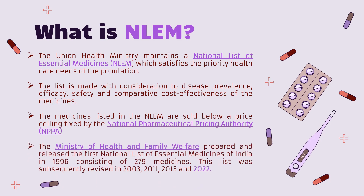The Ministry of Health and Family Welfare is responsible for preparing this list in India. The first list of essential medicines was in the year 1966 in India, which consisted of 279 medicines. The list was subsequently revised in 2003, 2011, 2015, and the latest published National List of Essential Medicines is from the year 2022.